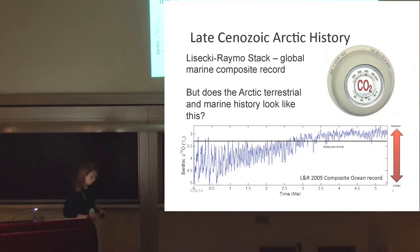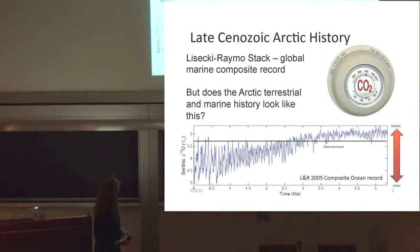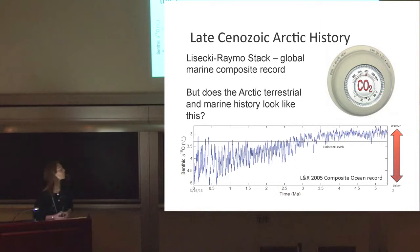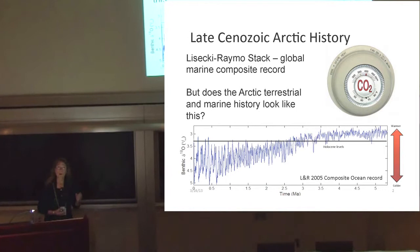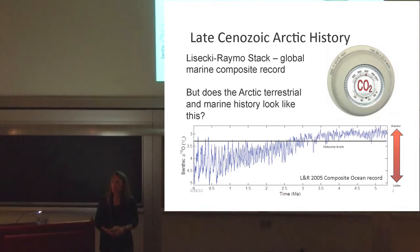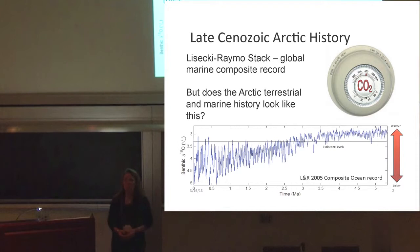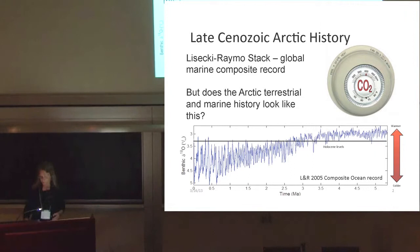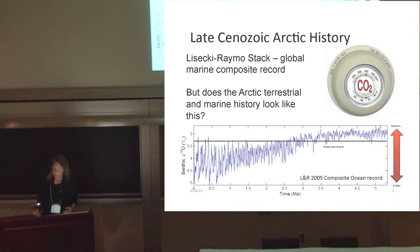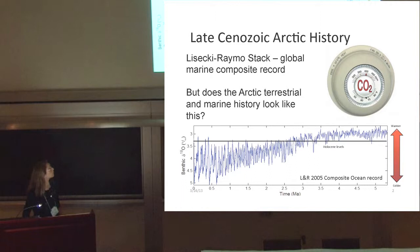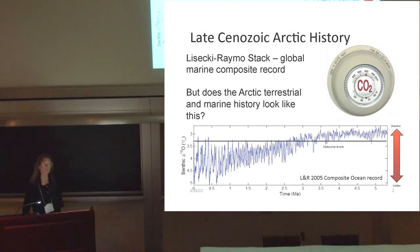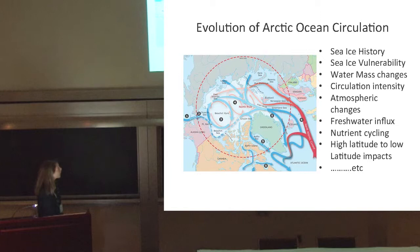Most of you will know the Liseki-Remo benthic delta-18-O stack from the world oceans — the Rosetta Stone we use. It's always been intriguing to think about: while this is a supposedly global record, we need to ask what it would look like if you were just looking at the Arctic. I've put up both the terrestrial and marine Arctic records, because so often reconstructions of Arctic climate history are put forward without regard to the very rich land record that is there. We have to make that handshake between the land and sea record, and there's so much we don't know. We have large challenges ahead, including the role that CO2 played.